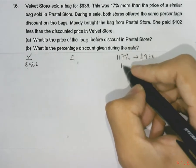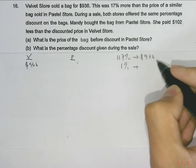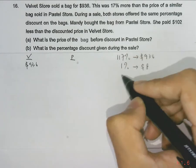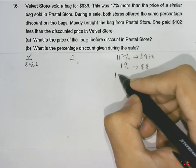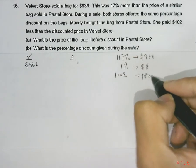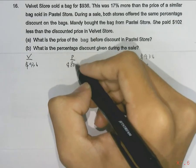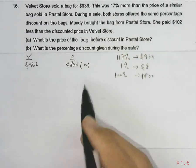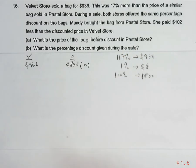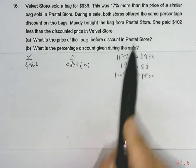First we will find our 1% by dividing $936 by $117, giving us $8. Next we find 100%, which gives us $800. So the pastel store sells the bag at $800, which is our answer for part A. Part A asked for the price of the bag before discount in the pastel store.